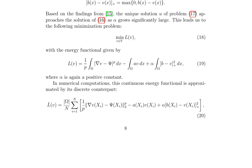This leads to the minimization problem: minimize over v in V of L(v), with the energy functional given by L(v) equals (1/p) integral over omega of |nabla v minus psi|^p dx minus integral over omega of a times v dx, plus alpha times the integral over omega of (v minus v)^2 plus dx. In numerical computations, the continuous energy functional is approximated by its discrete counterpart, summing over discretization points x_i the terms (1/p)|nabla v(x_i) minus psi(x_i)|^p minus 2a(x_i)v(x_i) plus alpha times (v(x_i) minus v(x_i))^2 plus.